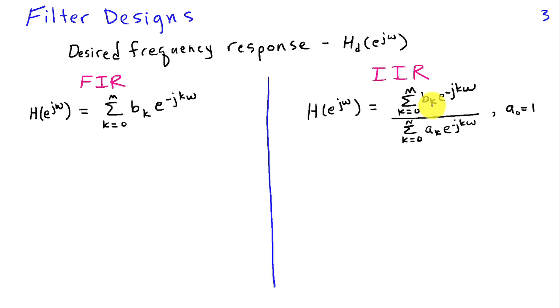In the IIR filter, we have coefficients b_k as well as a_k. And we get to choose both sets of those to approximate this desired frequency response. It turns out that because of the simplicity of the form of the FIR filter, namely that all of the coefficients are in the numerator, you can develop optimization methods for choosing the b_k so that H of e to the j omega approximates H_d of e to the j omega. What I mean by optimization is that you can do things like minimize the mean squared error between H and H_d. Or you can do things like minimize the maximum error between H and H_d. You can set up the design problem in an optimization framework and then use numerical optimization tools to find the b_k's.